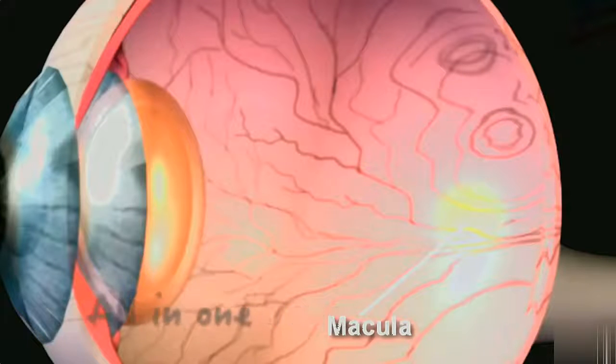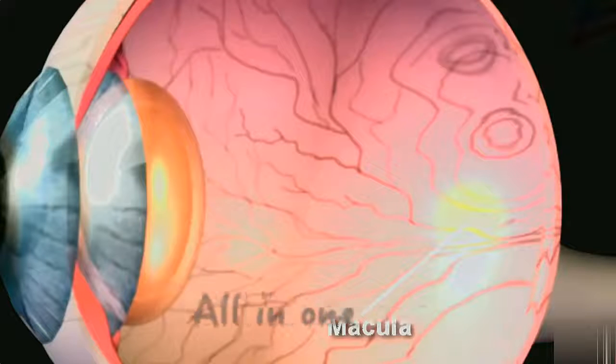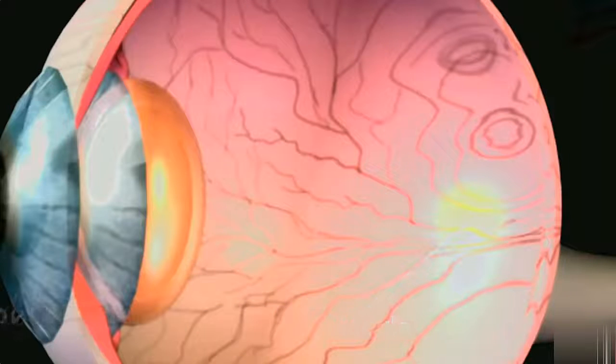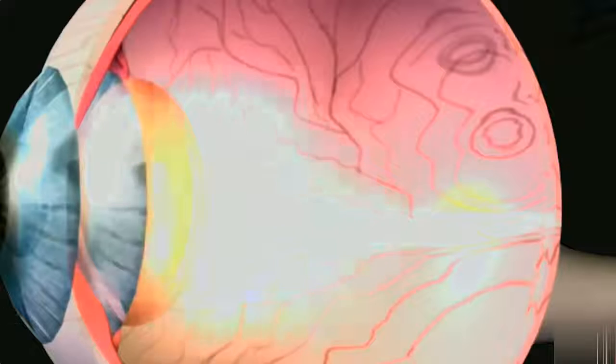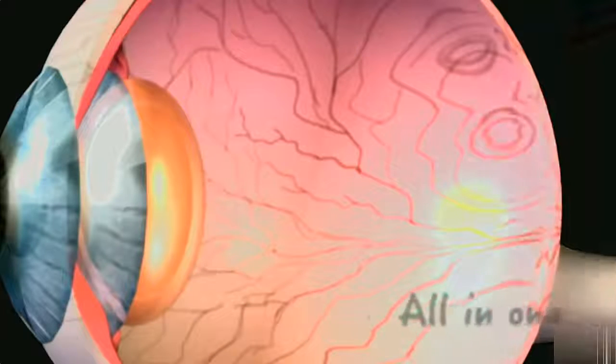The area of retina surrounding the macula gives us peripheral or side vision. The retina converts light rays into signals that are sent to the optic nerve and then to the brain.